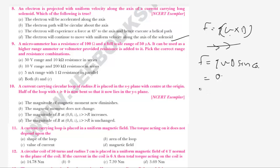Since B is parallel to v, there is no force acting on the system. Hence the electron will continue to move with uniform velocity along the axis of the solenoid. When the electron is projected in the same direction as the axis, the force acting is zero, so it continues to move in the same direction only.